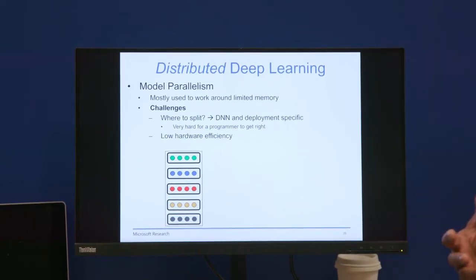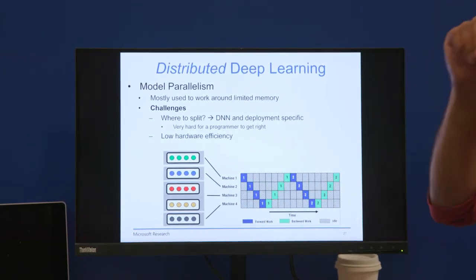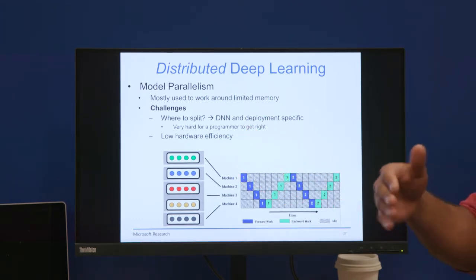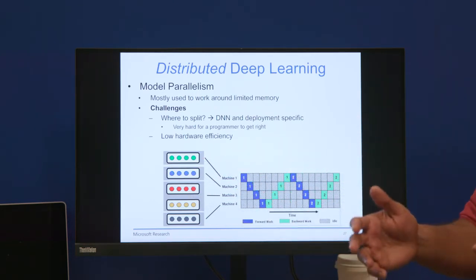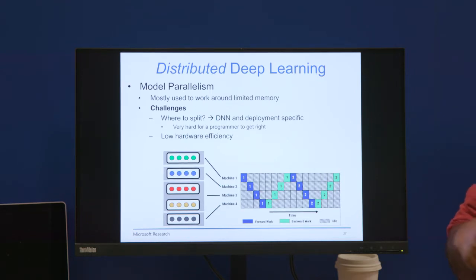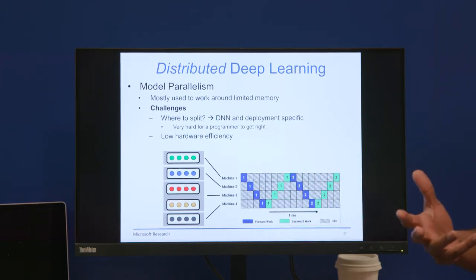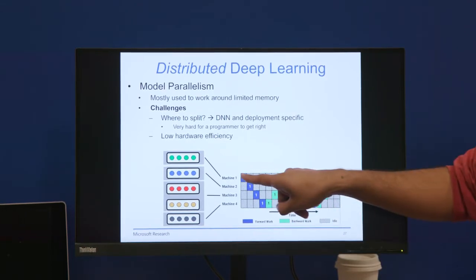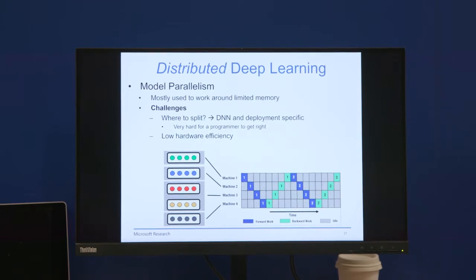The other approach that's used for parallel training is this thing called model parallelism, where you take a model and split it up across different GPUs. This is most commonly used to work around memory limitations if you can't load an entire model onto one GPU. This is great and enables you to at least train this model. But there are two major challenges. One, it's extremely hard for the programmer to figure out where to split this model. These splits will vary not just based on the DNN that's being trained, but also will vary based on the deployment in question. And the second is that of low hardware efficiency. You'll notice in this figure that only one GPU effectively is active at any given point in time, and all the other GPUs are sitting idle because of the nature of this computation. To do backward work at machine one for mini batch one, it has to wait for the work to go through all the other machines and come back to it.